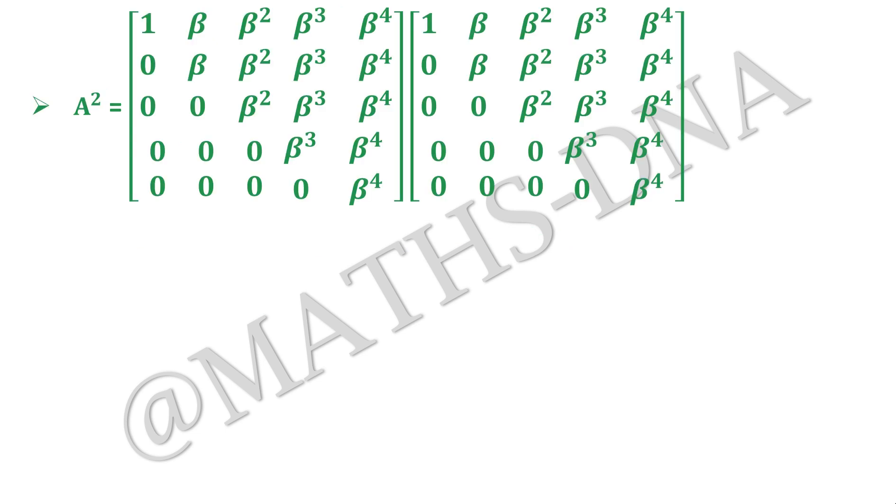Then we find A². A² is nothing but multiplying A with itself. And then we get it as this where the diagonal entries are 1, β², β⁴, β⁶ and β⁸. I have only mentioned the diagonal entries because the remaining entries you can easily find them.